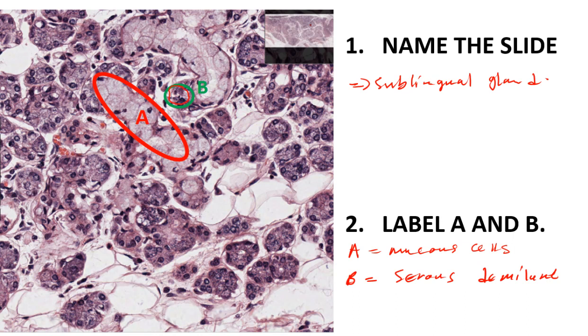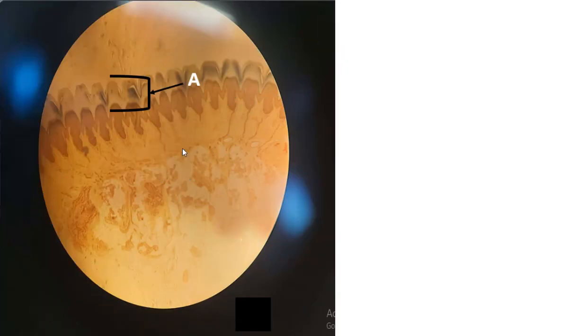The major function of the serous demilune is that it produces fluid containing lysozyme. This lysozyme acts on bacteria, playing a role in the immune system of a human being. These are important components of the sublingual gland.